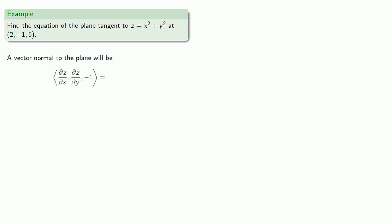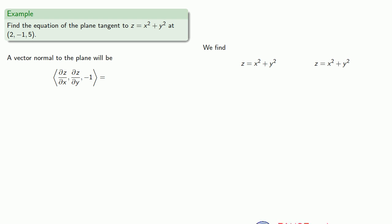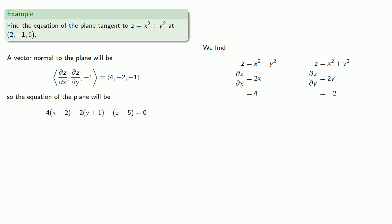So again, a vector normal to the plane will be the partial derivatives with respect to x and y, and -1. So we find those partial derivatives evaluated at the point. That gives us our normal vector, and then we can write the equation of the plane.